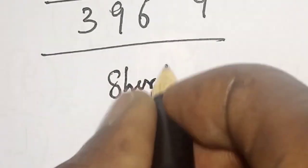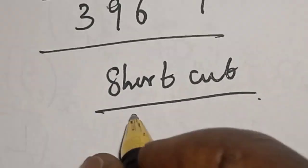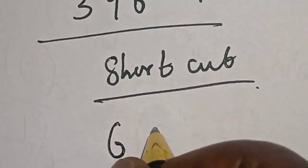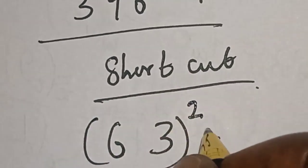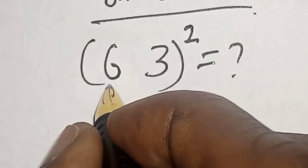Now let's see. Shortcut: Our shortcut is that 63 squared is equal to what we don't know. Now 63, here is 6.